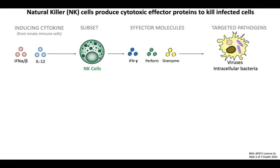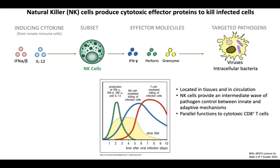Let's next learn about the functions of natural killer cells, or NK cells. NK cells can be induced by antiviral type 1 interferons or, similarly to ILC1s, by IL-12. However, NK cells have some additional effector mechanisms compared to ILC1s. NK cells are loaded with intracellular organelles called granules, which contain cytolytic proteins, including perforin and granzyme. In addition to producing type 2 interferon as a cytokine effector, NK cells also secrete perforin and granzyme, which can kill target cells infected with intracellular pathogens such as viruses or intracellular bacteria. In contrast to ILCs, NK cells are located both in tissues as well as in the circulation, so these are not strictly tissue-resident leukocytes.